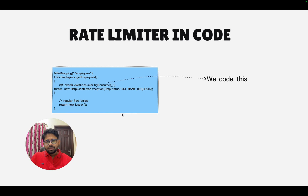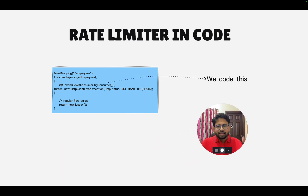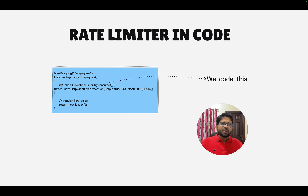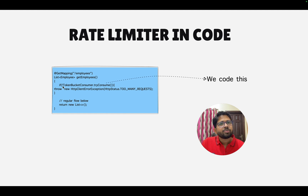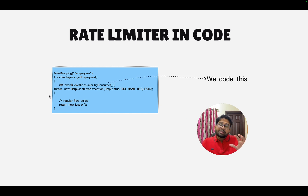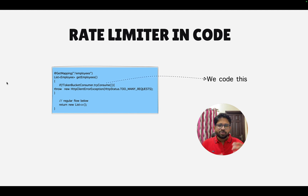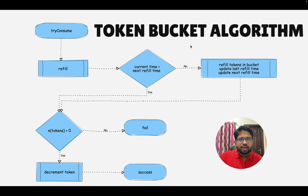If you look at how this looks in code, imagine a Java-based application with a controller that has a method called getEmployees — somebody making an API call to slash employees to get all employees. The first thing you do in the first line of code is consume a token. If you are not able to consume a token, you throw an exception; otherwise you proceed further. There are techniques like using an interceptor to avoid putting this logic in every method. Sometimes in the real world you have a ready-made solution for rate limiting that you can put in the interceptor.